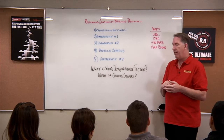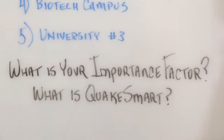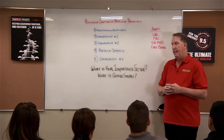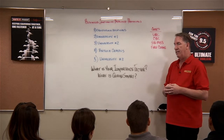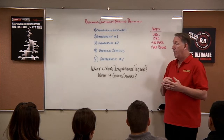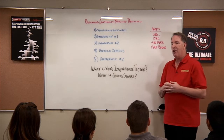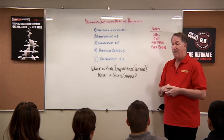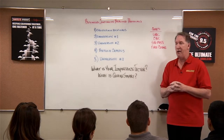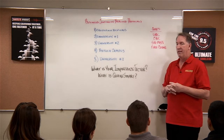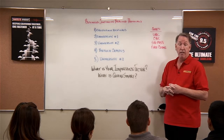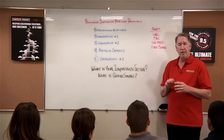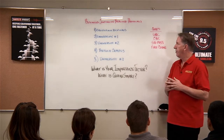How is that determined? The first thing taken into account is something called an importance factor. It is important to know what your importance factor is for your building. One of the things that goes into making up the importance factor — or IP — is how long you are comfortable having your business out of business after an earthquake. The higher the IP number, the lower the amount of time it's okay for you to be down. In a hospital, we want no downtime. Hospitals need to continue functioning following an earthquake, so their IP is 1.5.